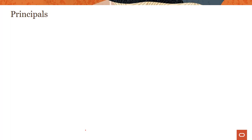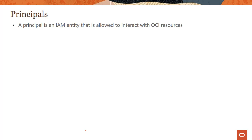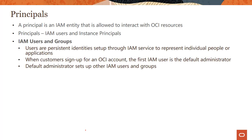A principal is an IAM entity that is allowed to interact with OCI resources. Everything you do in OCI — compute instances, block volumes, virtual cloud networks — is a resource. There are two kinds of principal: IAM users, who access the cloud environment, and instance principals. Users are persistent identities set up to represent individual people or applications. When you sign up for an OCI account, the first IAM user is the default administrator, who sets up other IAM users and groups.